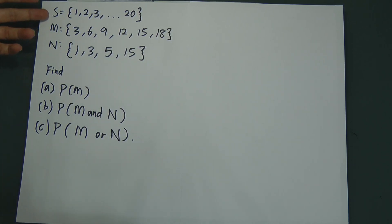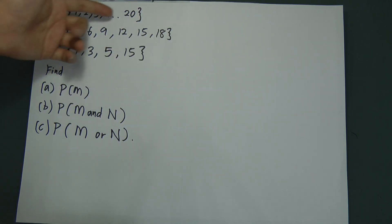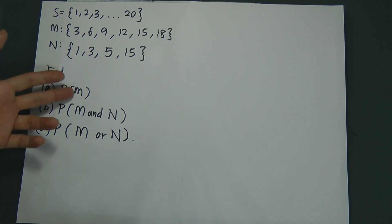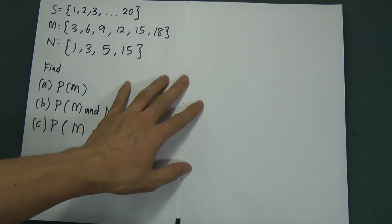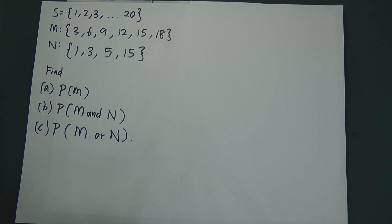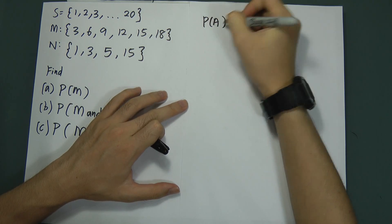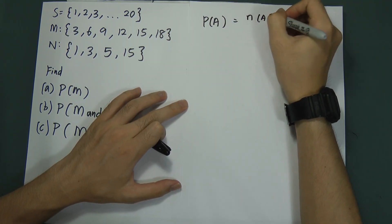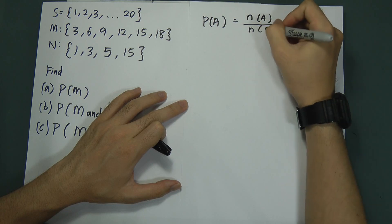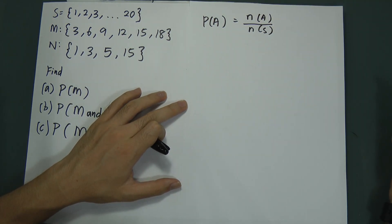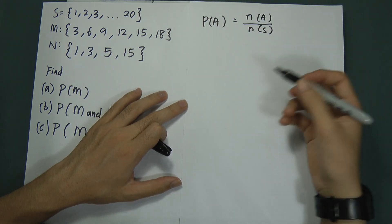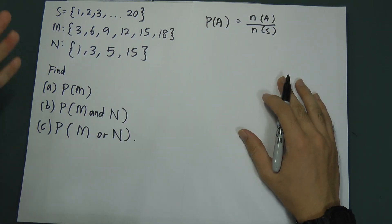First, he gives you a sample space — maybe this is some data collected for an experiment. It's from 1 to 20. This is event M and this is event N. Now, the formula for probability is: probability of A equals number of event A divided by number of sample space. This is the formula you should have learned in mathematics already.